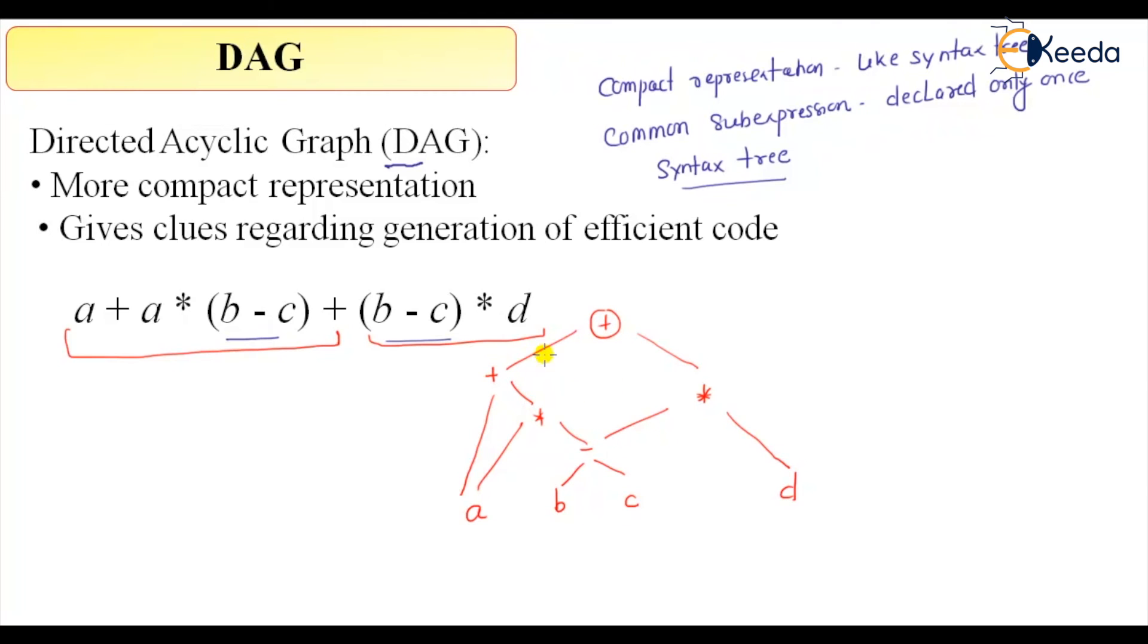The reason it is called as DAG is because these are forming some cycle. The direction of the arrows will always be upward towards the root node.